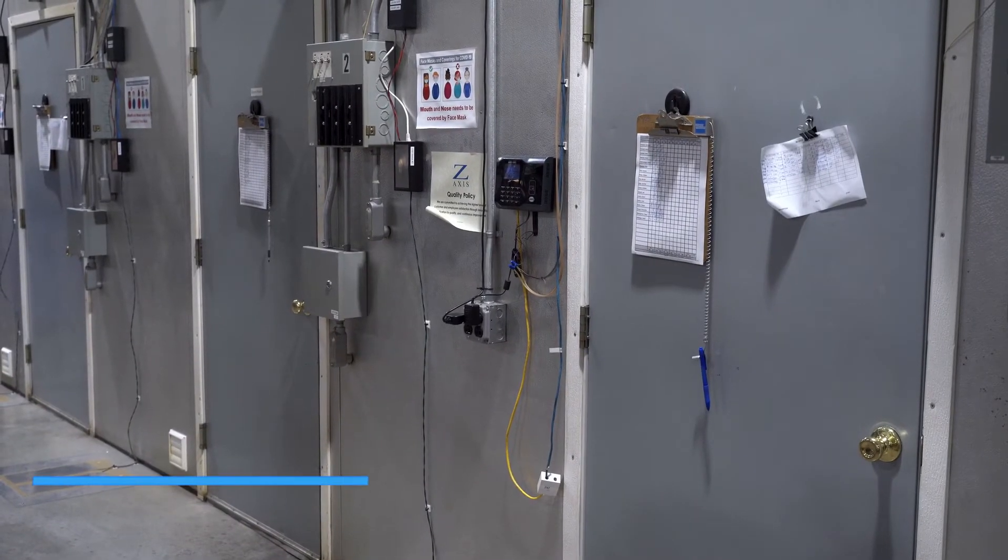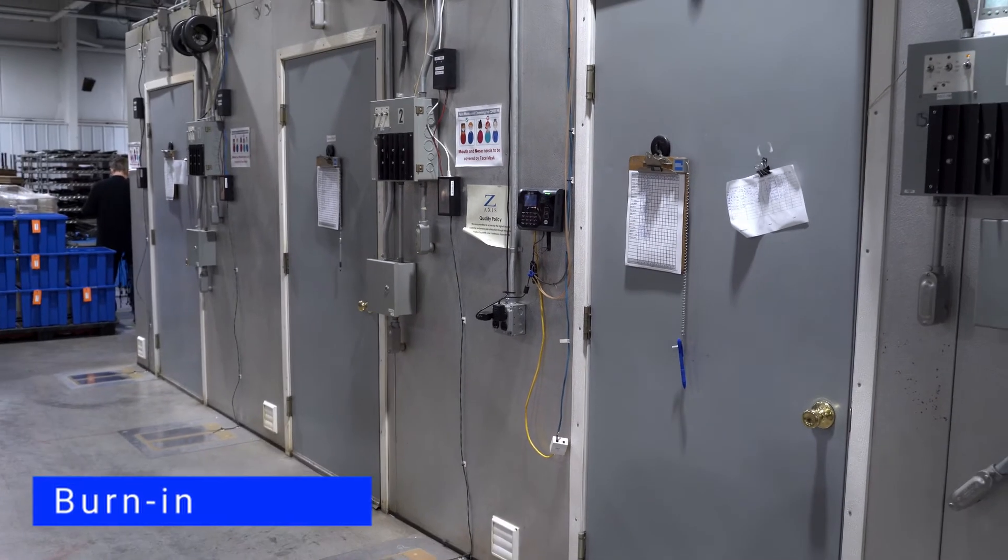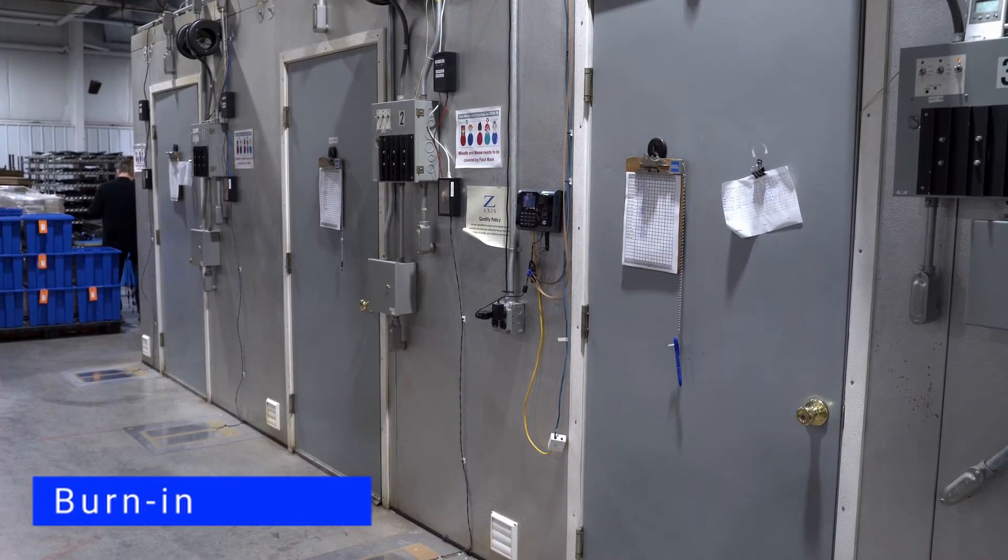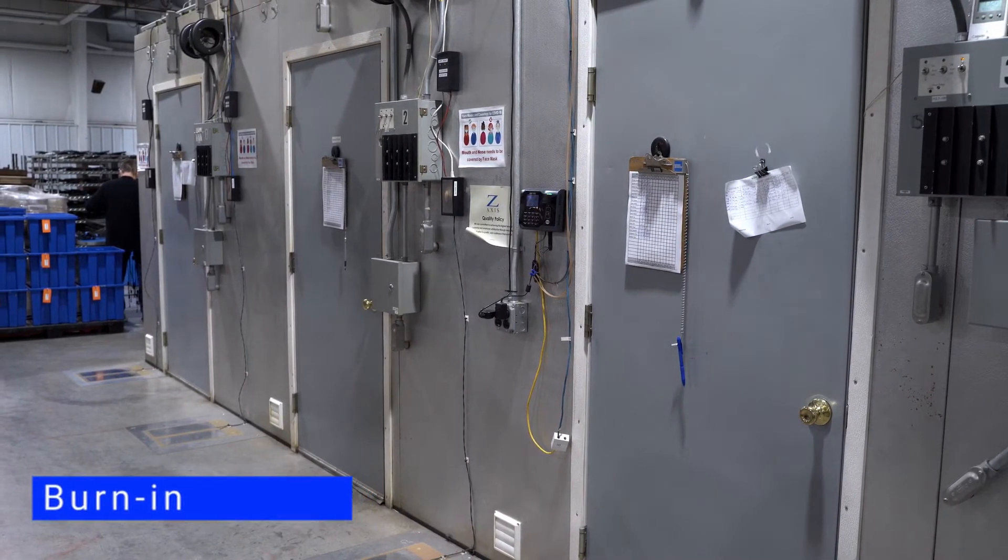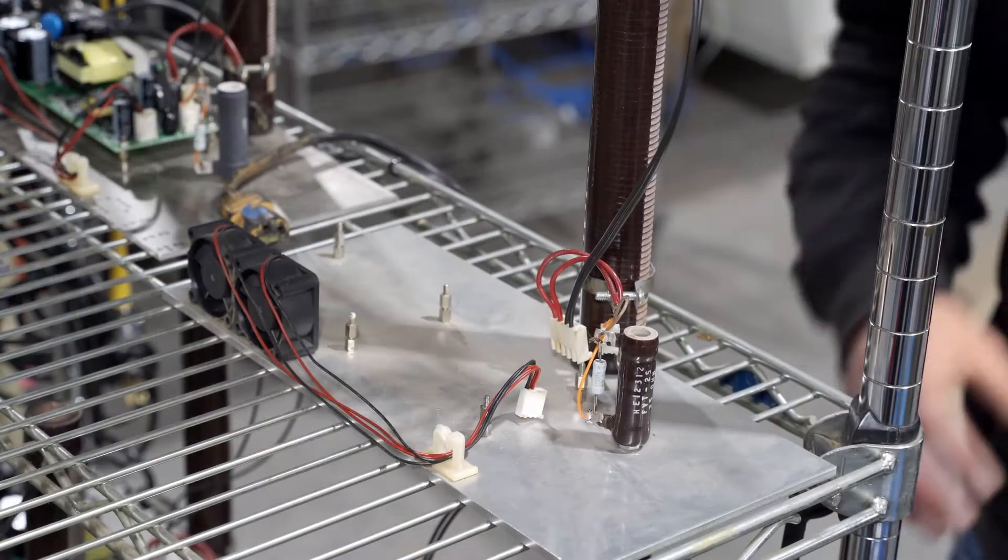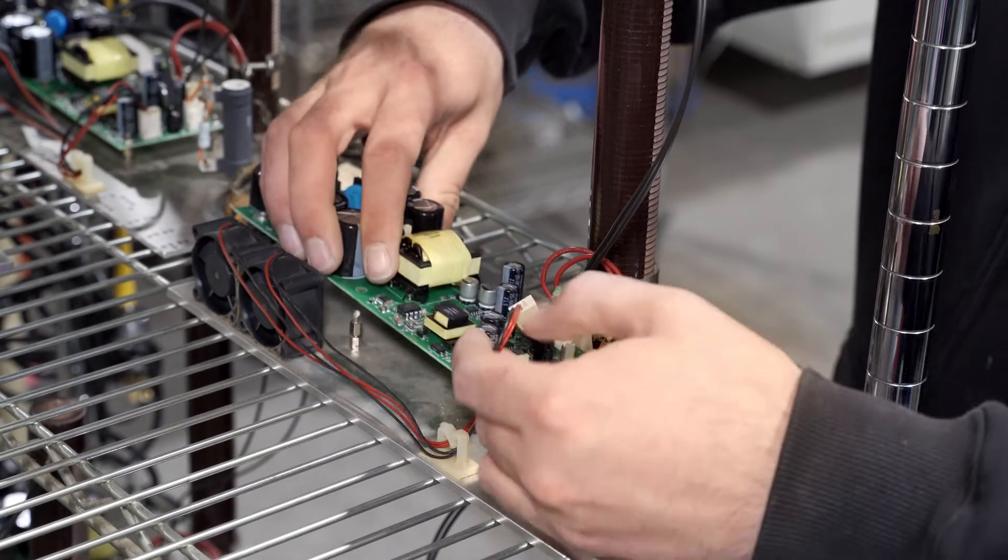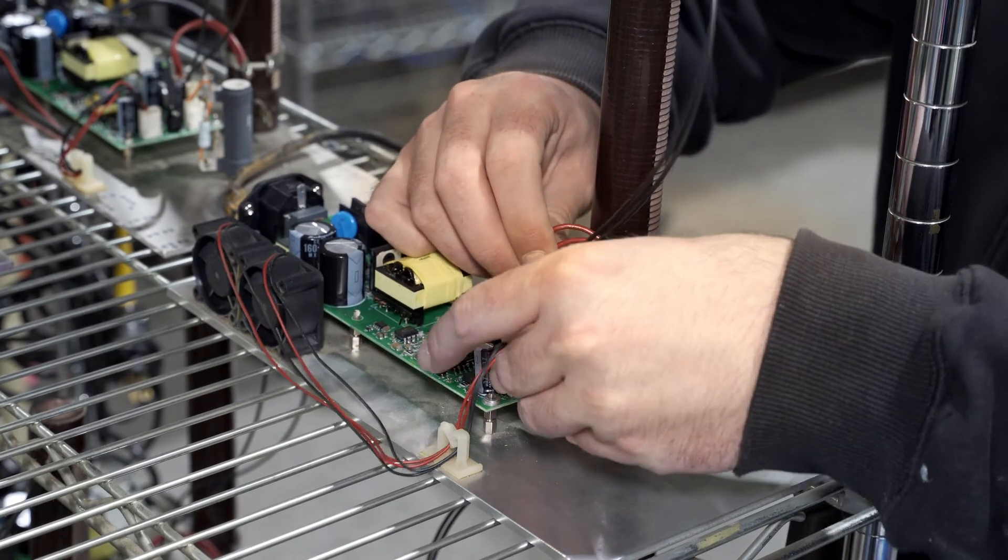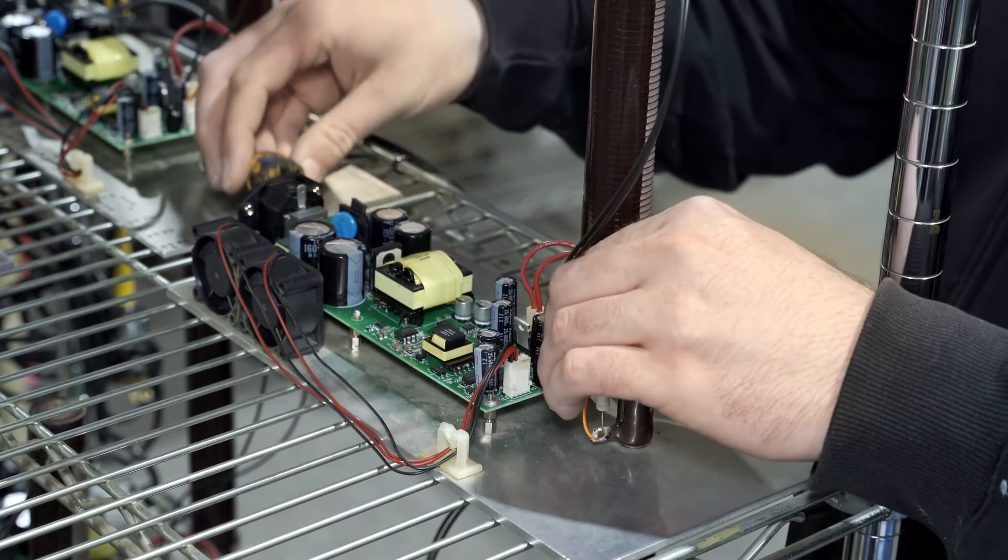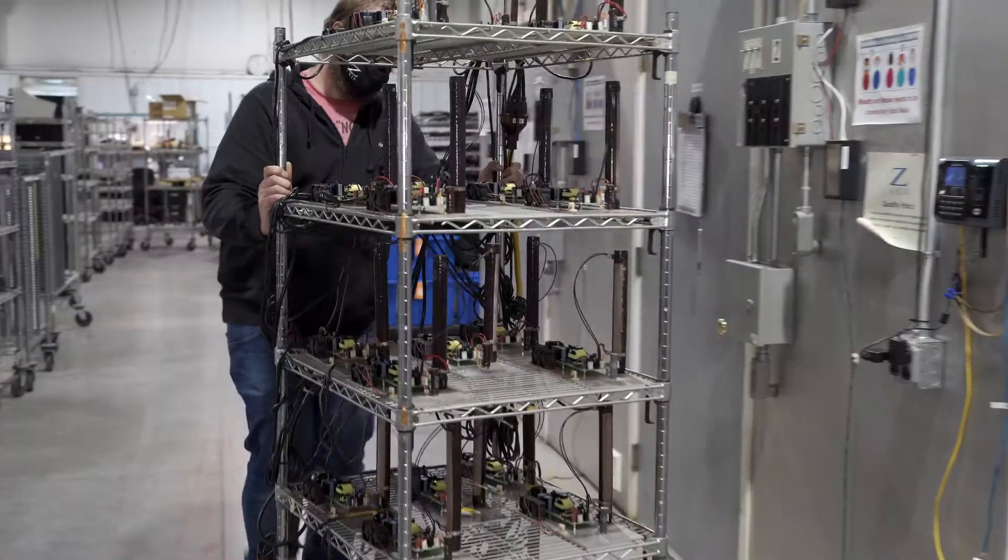At Z-Axis, we use burn-in to get units through the early failure period here at our facility rather than after they reach their customers. We design and build burn-in fixtures specific to each product. We connect the units into the fixtures then move them into the burn-in chambers.